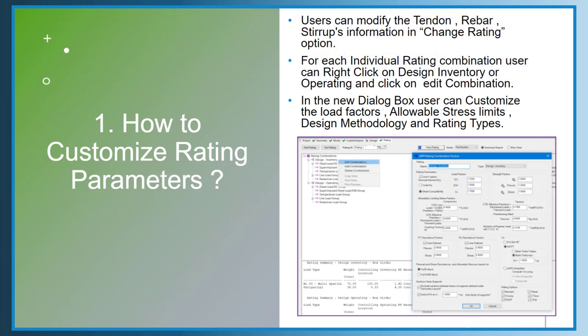Some queries received for CONBOX or the post-tension box girder module concern how to customize rating parameters. In the rating tab, the user can modify the tendon, rebar, and stirrup information in the Change Rating option. For each individual rating combination, the user can right-click on design inventory or design operating combinations and click on Edit Combination. A new window appears where the user can customize the load factor, allowable stress factors, design methodology, and rating types — customizing their rating as per client requirements.